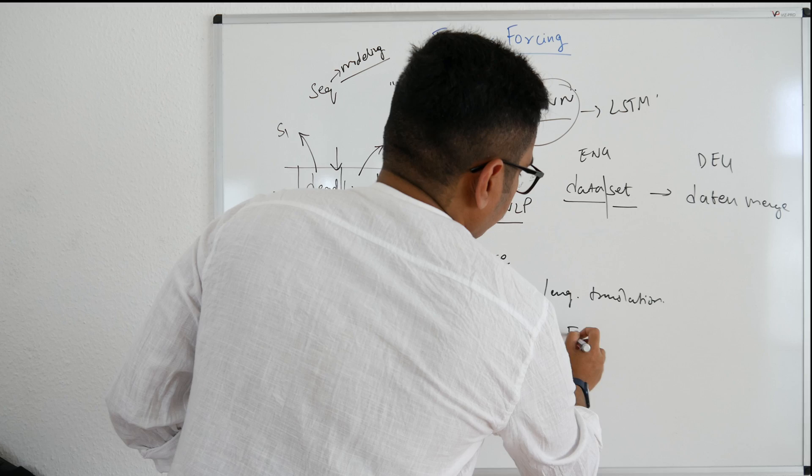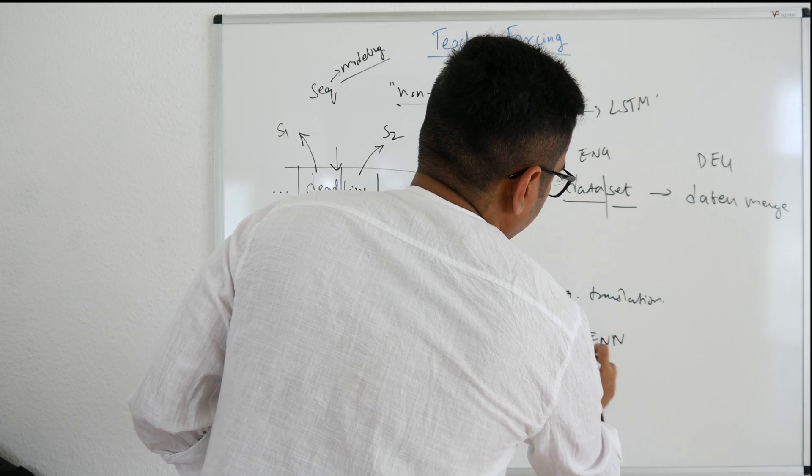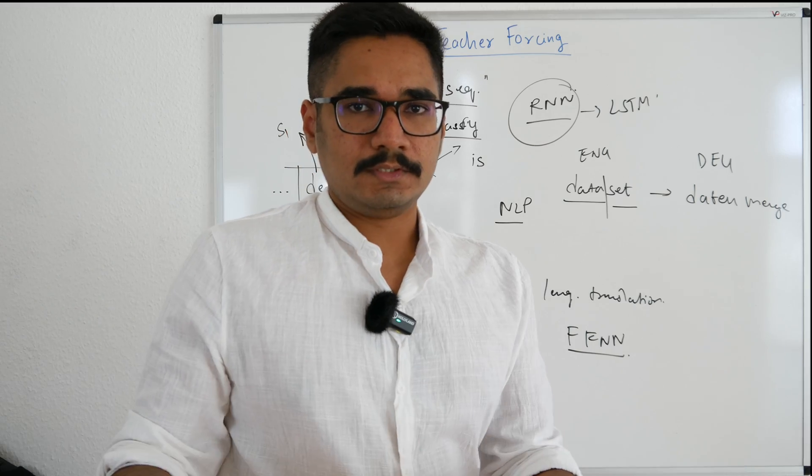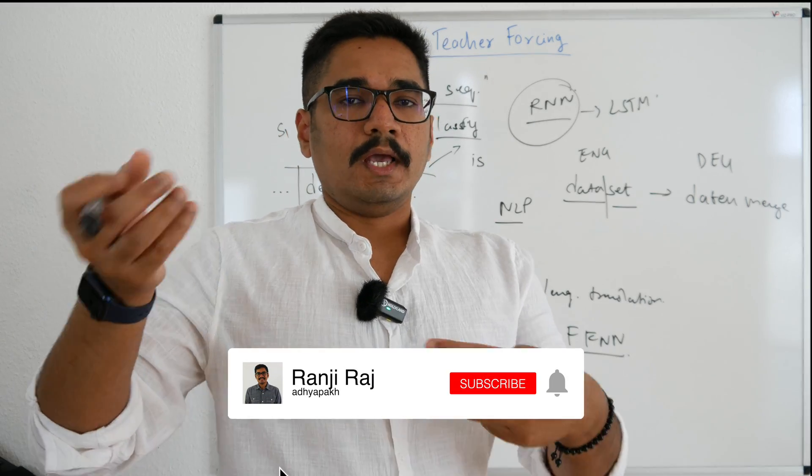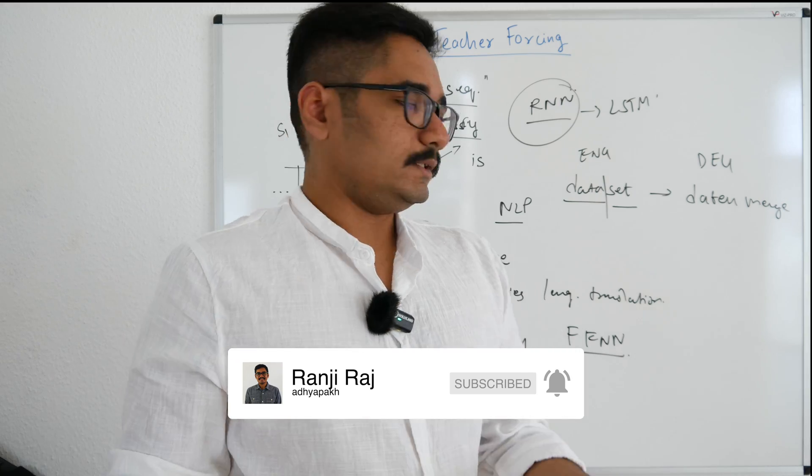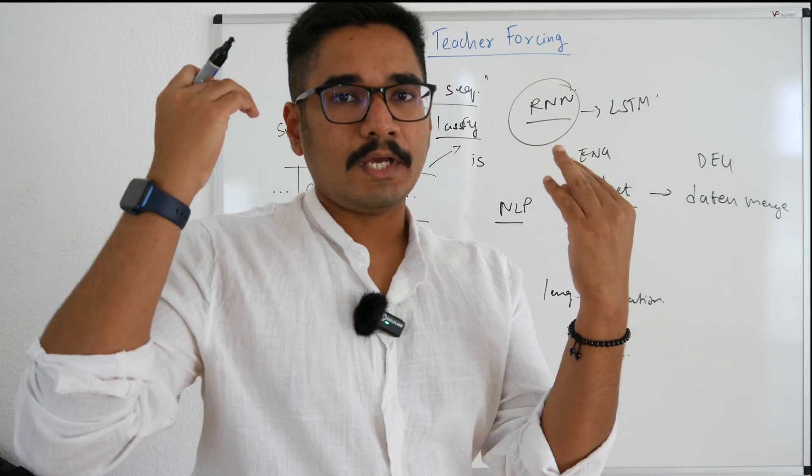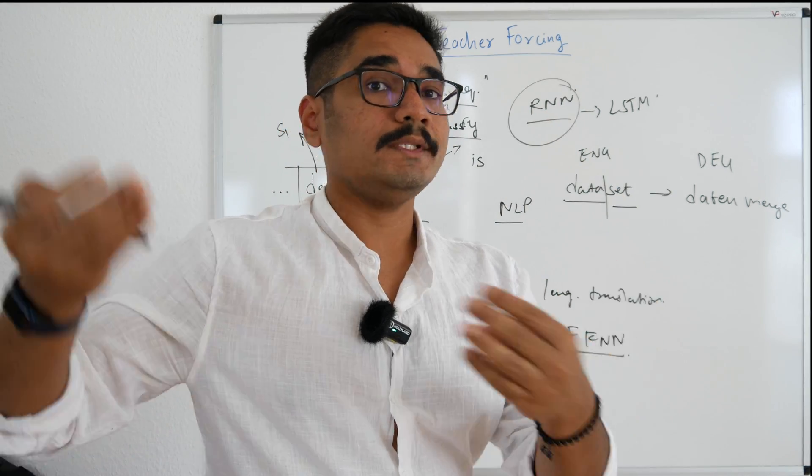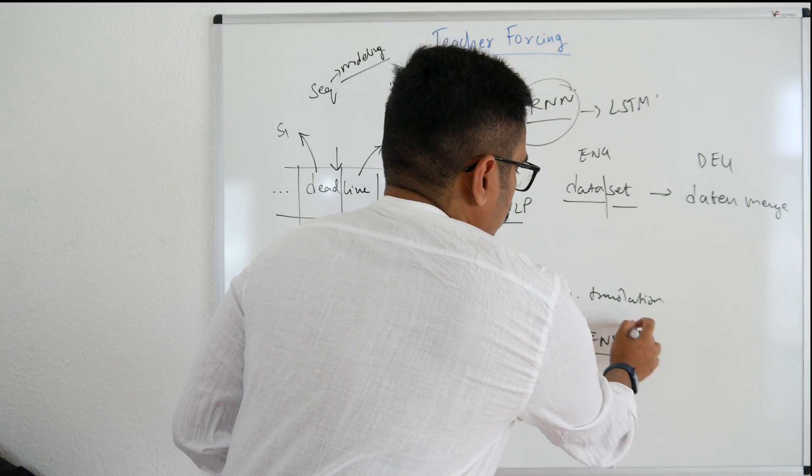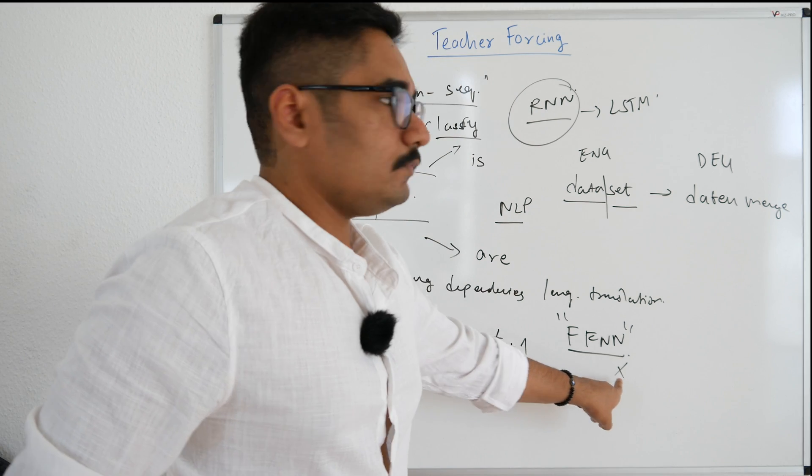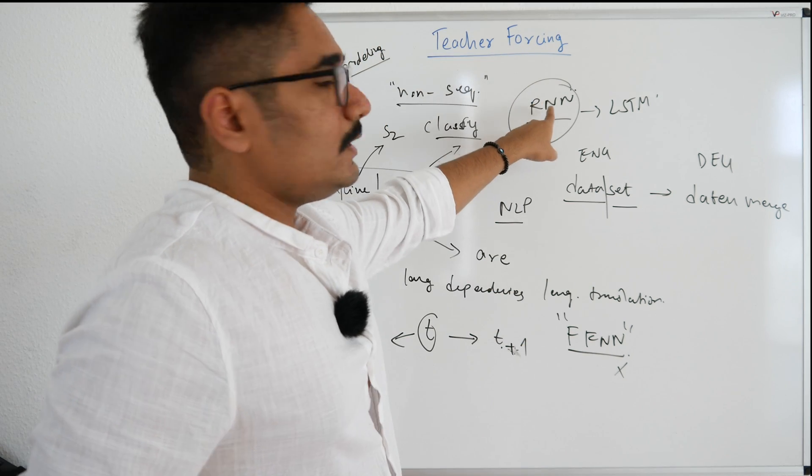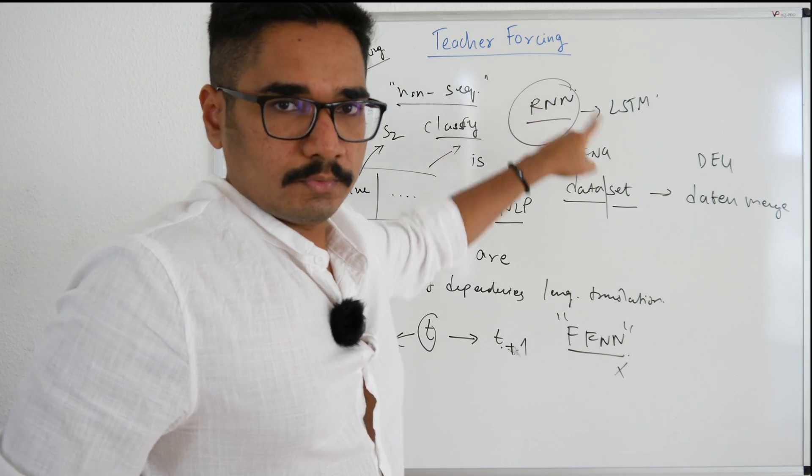Usually our feed forward neural network, that is FFN, doesn't have a memory. That means it doesn't consider words in a sequence but as and when the words arrive, it just processes and classifies it. That's not the case with RNN. In RNN you need to have a memory in order to know what the previous word was. So in order to do that, FFN might not be an ideal case. For that you need to have RNN. Now we'll understand what teacher forcing is and where this exactly comes into this.